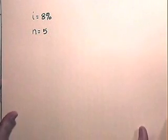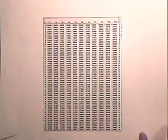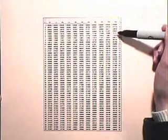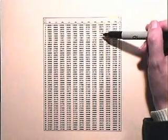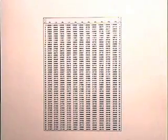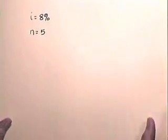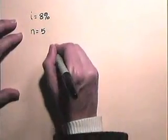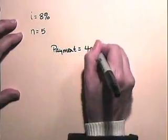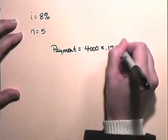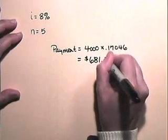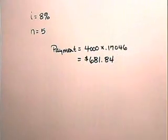We go across the top column until we find 8%. We go down until we find the row that has 5 periods, and we find that number to be 0.17046. So the payment into the sinking fund will be $4,000 times 0.17046, which is $681.84.